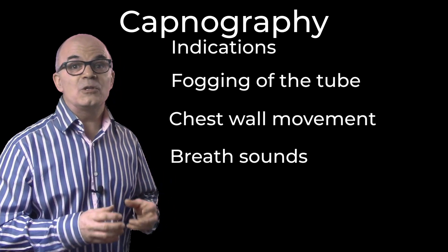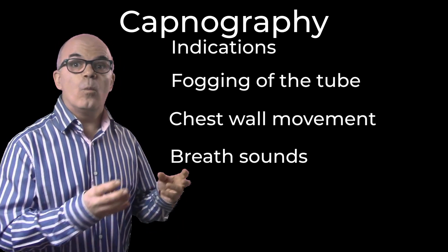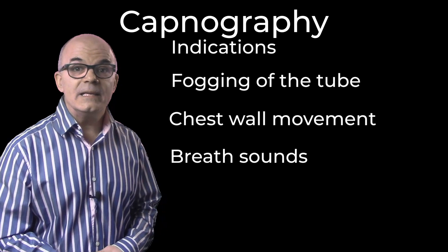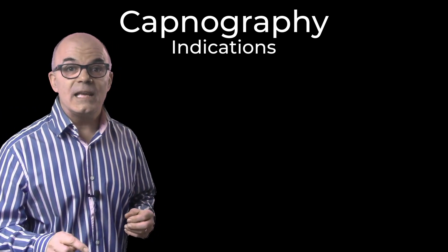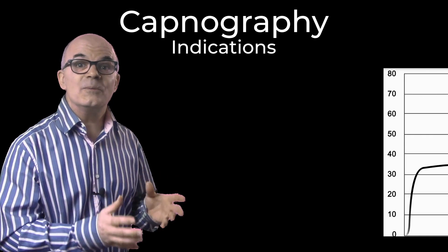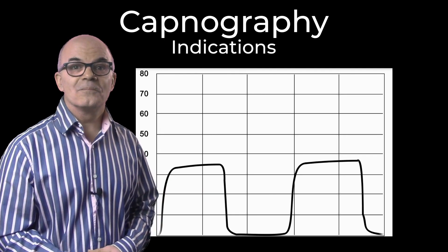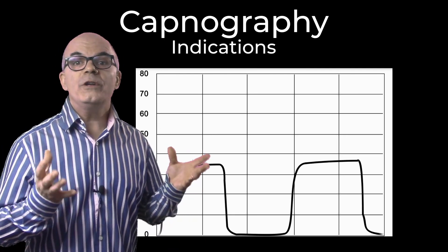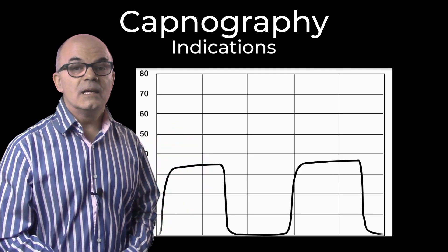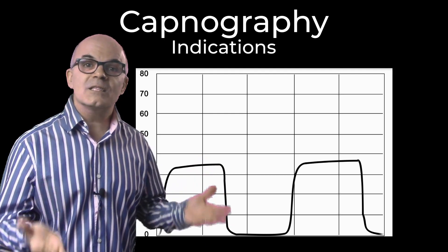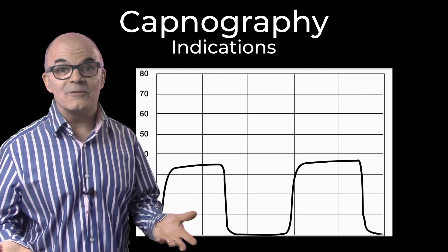The lungs produce CO2 constantly, and so when the endotracheal tube is placed, the best confirmation you can have that it is in the trachea rather than the esophagus is the presence of CO2. However, one needs to be also cautious with this interpretation. CO2 can be present in the stomach, if the patient has been bagged, for example.